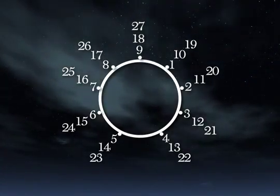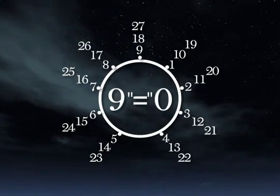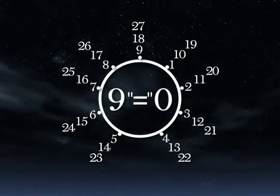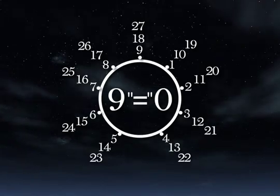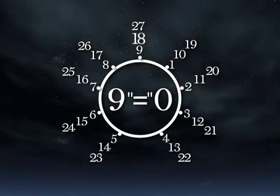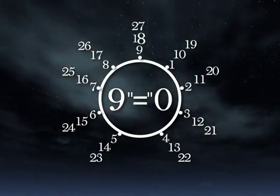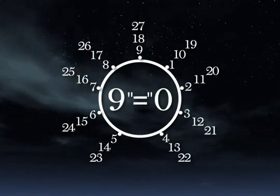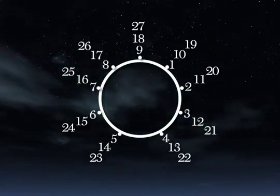So in digit sums, adding 9 is effectively adding 0. That's why we can cast out 9s when checking answers with digit sums. 18's digit sum, 1 plus 8 is 9. And at the heart of the branch, not surprisingly, we find 0.